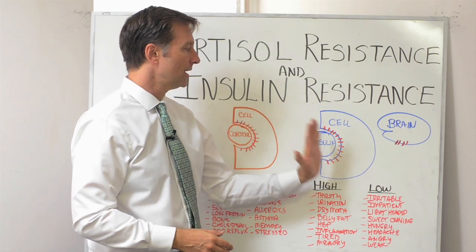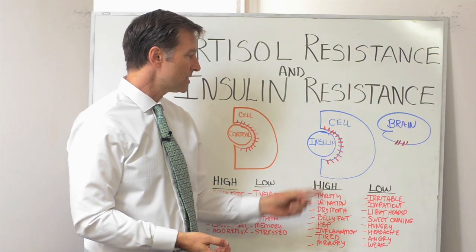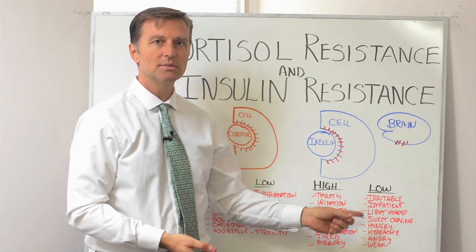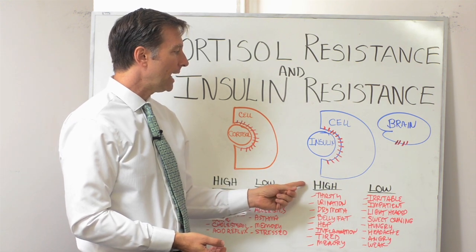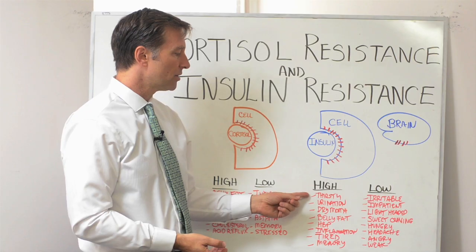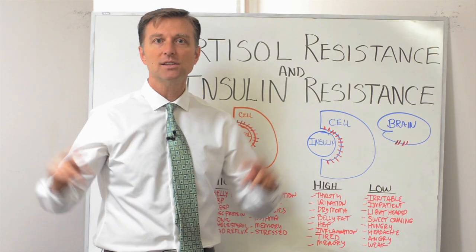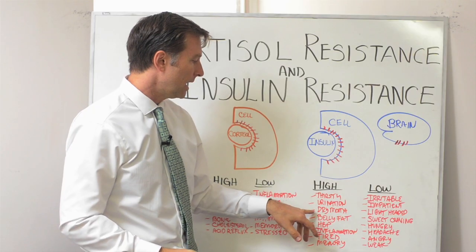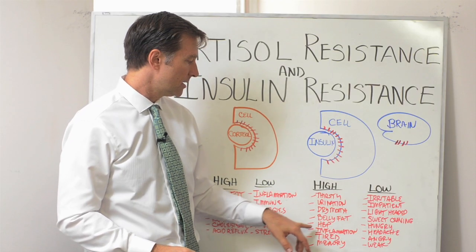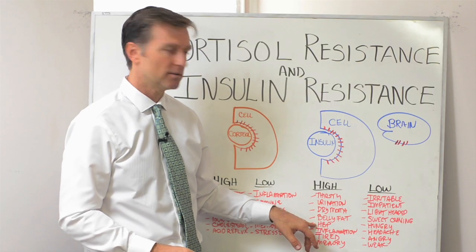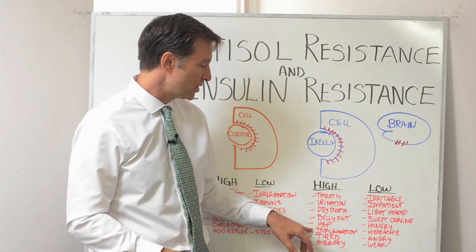Now let's shift to insulin resistance. It has similar symptoms to cortisol resistance. High insulin creates constant thirst, frequent urination — a diabetic state — dry mouth, belly fat, high blood pressure. It's similar. You're inflamed, you have inflammation.